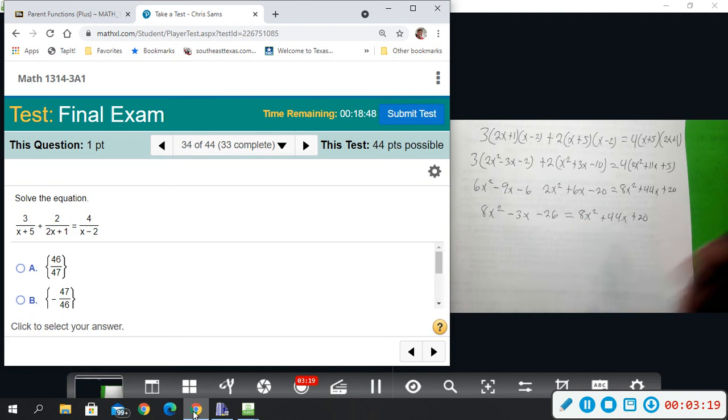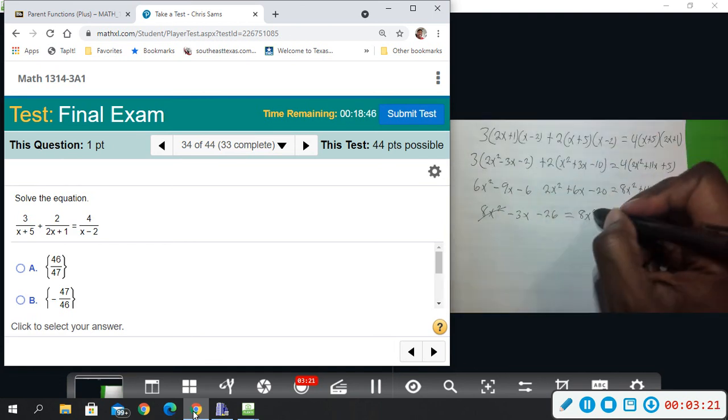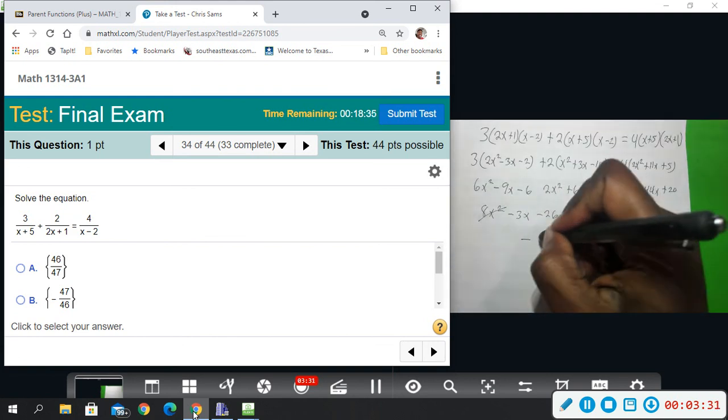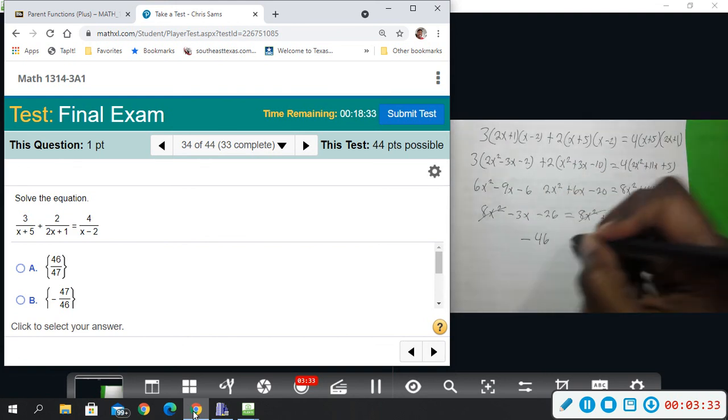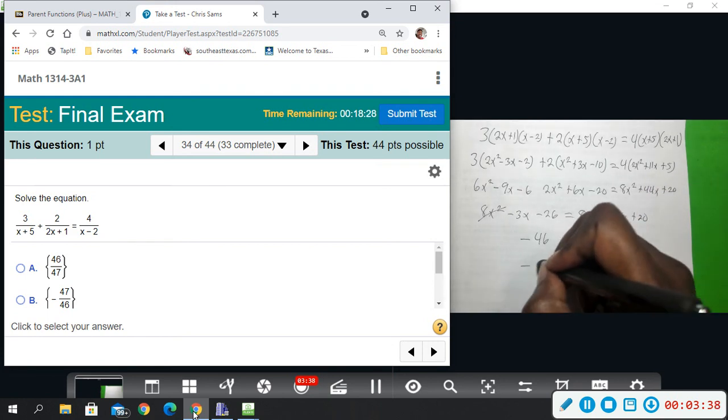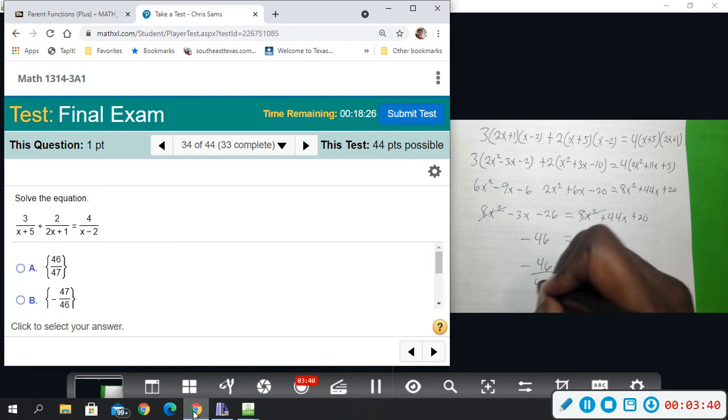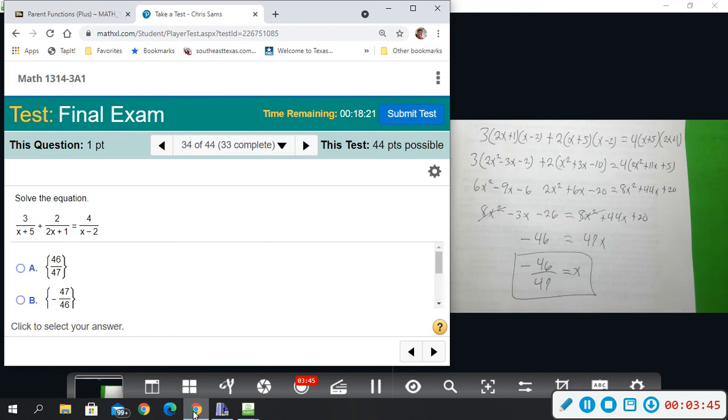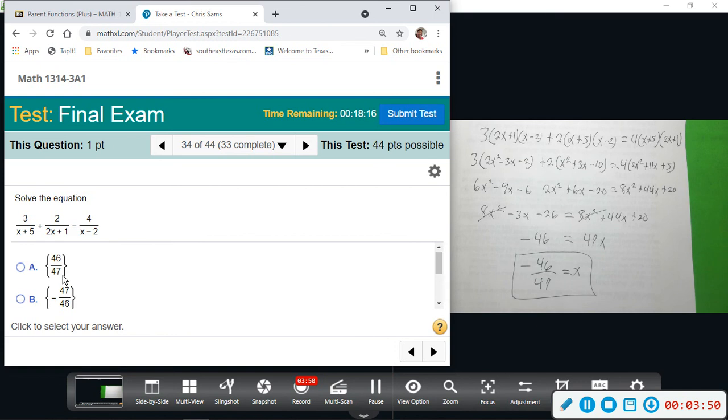So the fact that we have 8x squared on both sides, when we subtract that will cancel out. And then I will add 3x, subtract 5, subtract 26. So that would give me negative 46 equals 14x divided by 14, so you get negative 46 over 47 equals x. So that will be your solution, negative 46 over 47.